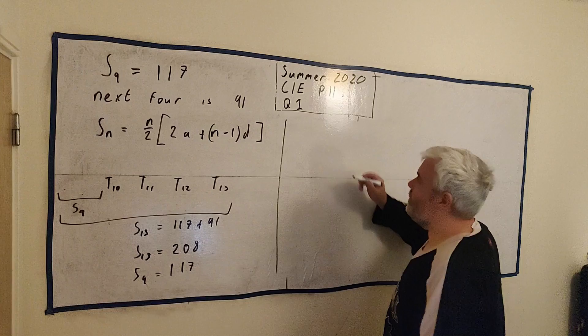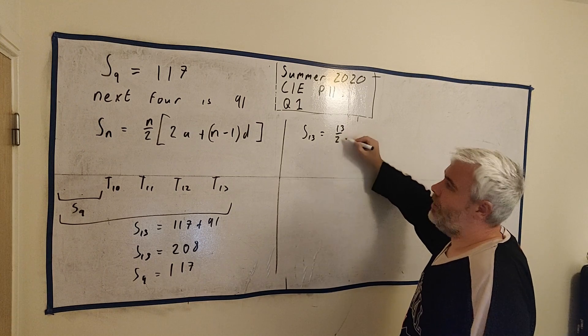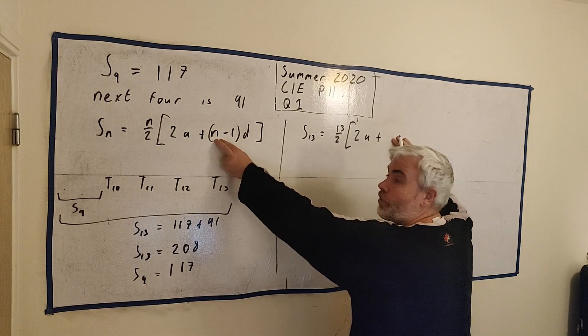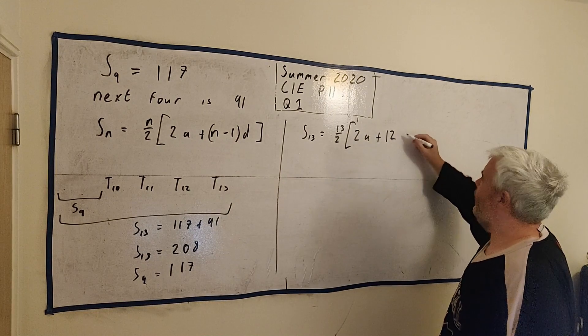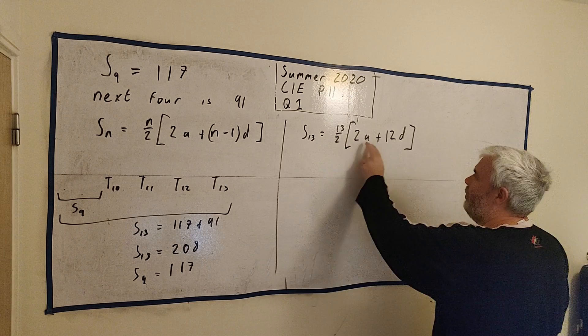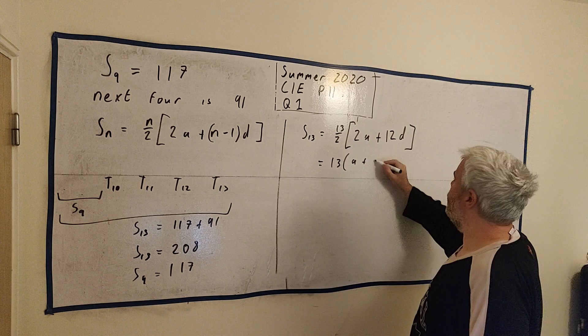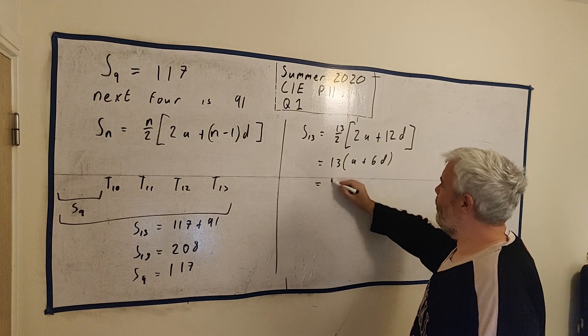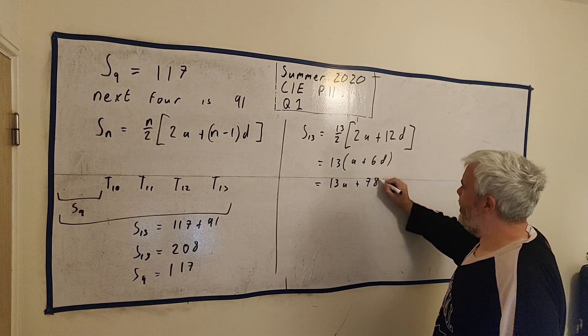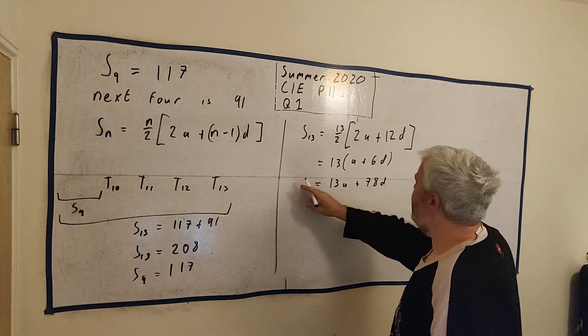S₁₃, if I fill it into this formula, I get S₁₃ is equal, n is 13. So 13 divided by 2, 2 times a, we don't know what a is. 13 minus 1 is 12. I'll save myself a little bit of work here. And let's clean this up a bit. 2 divides into everything. So we're left with 13a plus 78d. Use a calculator for things like that if you're not good at doing it in your head.